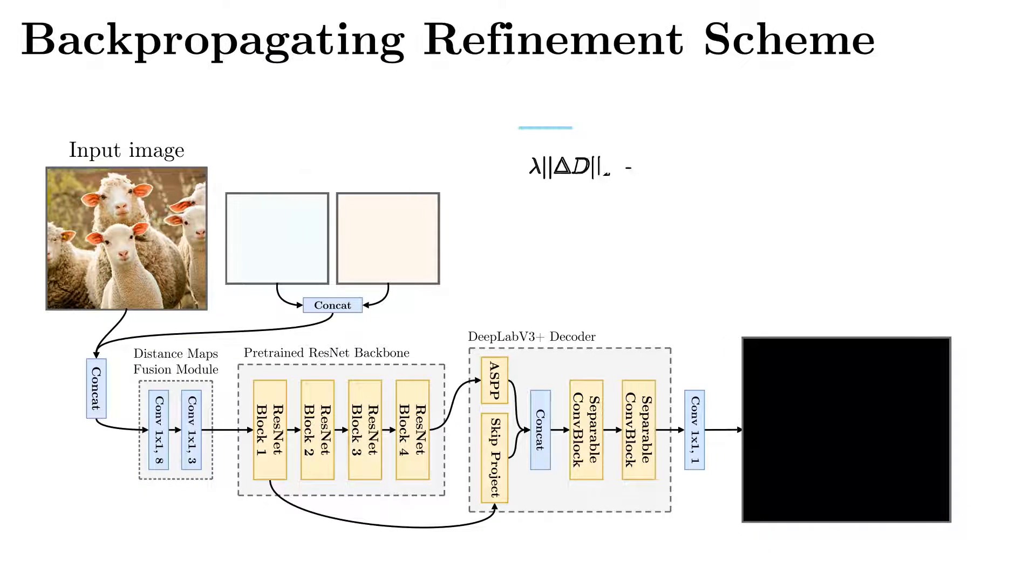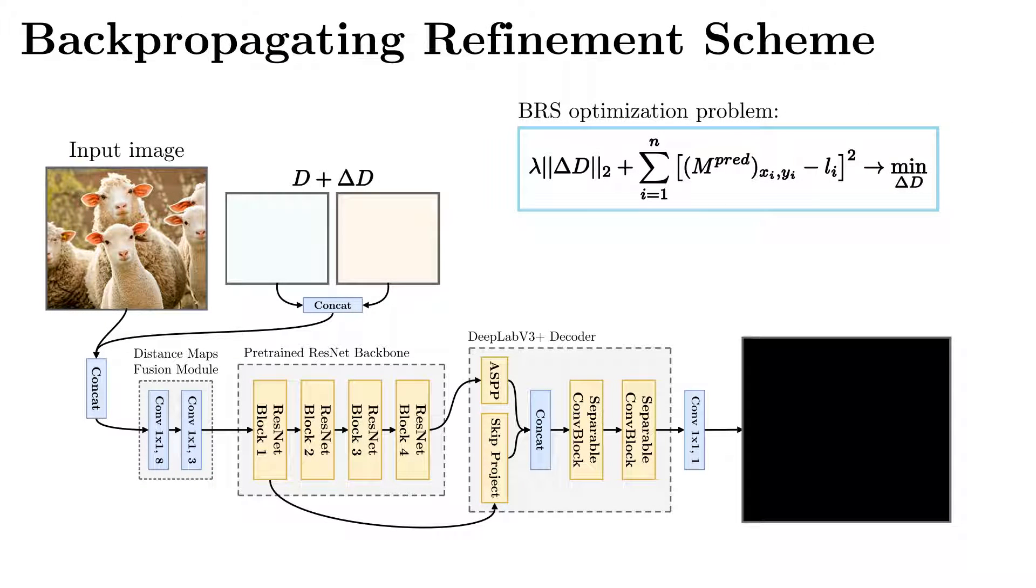The recently introduced Backpropagating Refinement Scheme solves this issue by addressing the following optimization problem. BRS minimizes mean squared error loss only at user clicks positions. LBFGS is used as an optimizer.